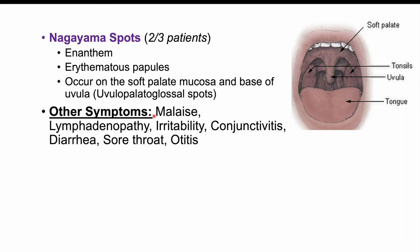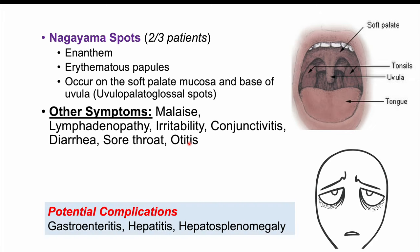Other signs and symptoms include malaise, lymphadenopathy (swollen, tender lymph nodes), irritability, conjunctivitis, diarrhea, sore throat, and otitis (middle ear infection). Possible complications include gastroenteritis, hepatitis, and hepatosplenomegaly (enlargement of the liver and spleen). These complications are very rare but can occur in infants who are themselves immunosuppressed, as poor immune system functioning makes them more susceptible.